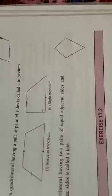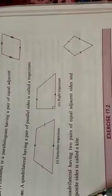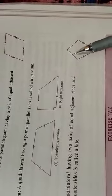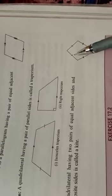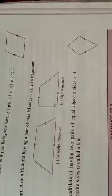Now coming to the next one, that is kite. A quadrilateral having two pairs of equal adjacent sides and unequal opposite sides is called a kite. In a kite, adjacent sides are equal whereas opposite sides are unequal. Here, the adjacent sides are equal — this is not opposite to this; the opposite side is this one — so opposite sides are not equal. It has two pairs of equal adjacent sides.